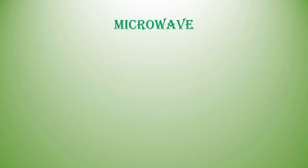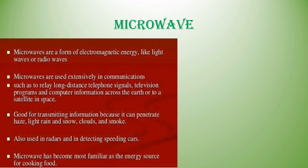Microwaves are a form of electromagnetic energy like light waves or radio waves. Microwaves are used extensively in communications such as relaying long-distance telephone signals, television programs, and computer information. They are good for transmitting information because they can penetrate haze, light rain, snow, clouds, and smoke. Microwaves are also used in radar and detecting speeding vehicles, and have become most familiar as the energy source for cooking food.